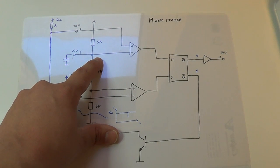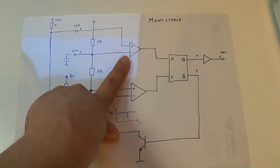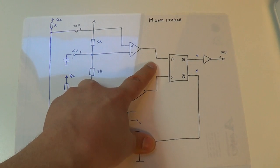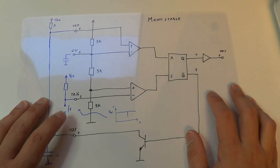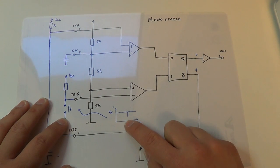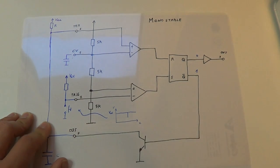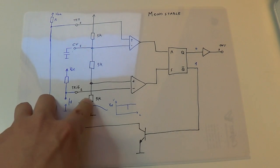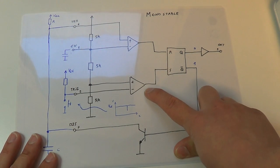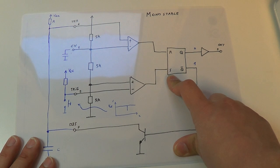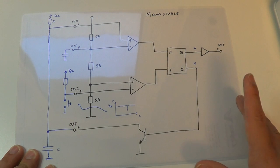With around three volts here, the minus input of that comparator is higher than the other one, so the output is zero. When you press and quickly release this button, you get this kind of pulse — it is high, goes down briefly, and goes high again. When you press the button, you get zero on one input and one on the other, so the comparator output goes high and it sets the flip-flop: the output goes to one and the negated output goes to zero.